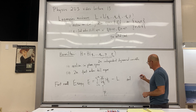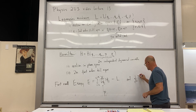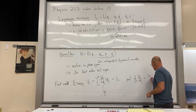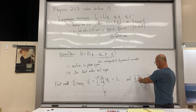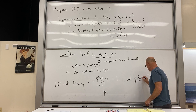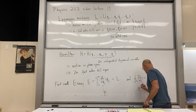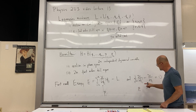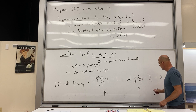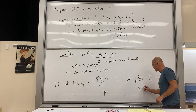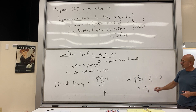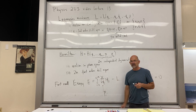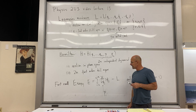We have the Euler-Lagrange equation: d/dt(∂L/∂q_i-dot) minus ∂L/∂q_i equals zero, so p_i-dot equals ∂L/∂q_i. This energy is the quantity conserved under homogeneity of time.